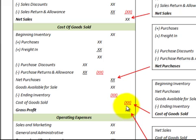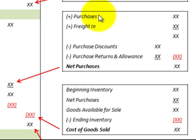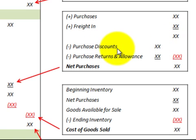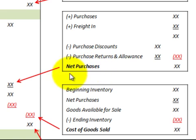Let's look at a summary table for net purchases. We add the purchases for the period plus the freight in for those purchases to get a subtotal, then subtract out the purchase discounts and purchase return allowances, and subtract that from our purchases to come up with the net purchases.